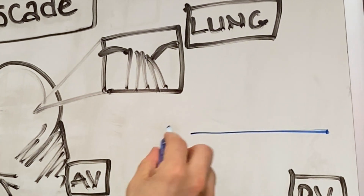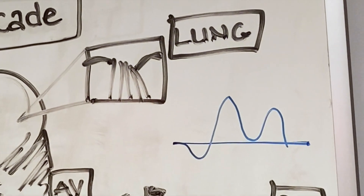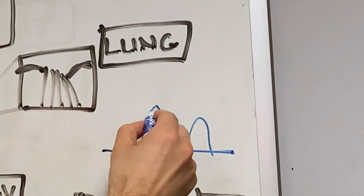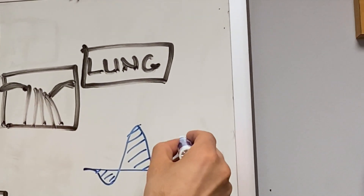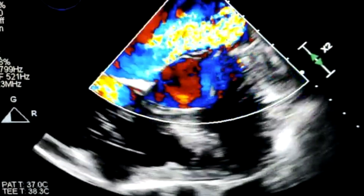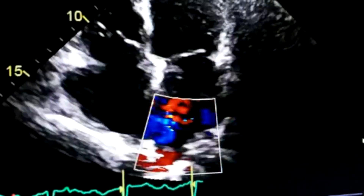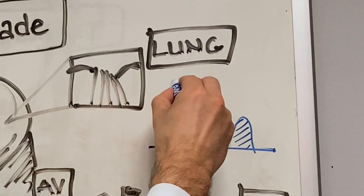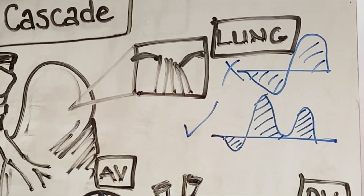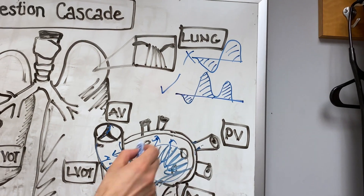Similar to the hepatic veins but reversed. Normal pulmonary vein flow includes a reversal wave when the atria contracts, systolic forward flow, and diastolic forward flow. When you have severe mitral regurgitation or increased left ventricular end-diastolic and left atrial pressures, this waveform becomes biphasic. Normal is good; biphasic pulsatility is bad — biphasic waveforms indicate high pressures on the left side.